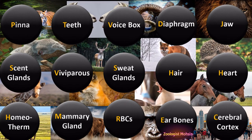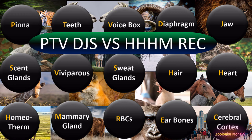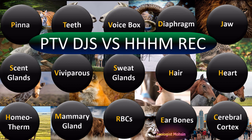Now let's look at a single sentence to remember all 15 features: 'PTV DJs vs Hum Records.' PTV is a news channel, DJs you know, and Hum is another news channel. P for pinna, T for teeth, V for voice box, D for diaphragm, J for jaw, S for scent glands, V for viviparity, S for sweat glands, first H for hair, second H for heart, third H for homeothermy, M for mammary glands, R for RBCs, E for ear bones, and C for cerebral cortex. Hope you will remember these 15 features using this sentence.